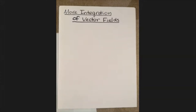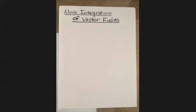In my last two videos I talked about working with integration on conservative and non-conservative vector fields. In this video I wanted to work just two examples where we're not really told one way or the other whether it's conservative or not conservative, so we're going to have to decide which strategy would be best to approach the integral we're working with. Let's go ahead and jump right in.